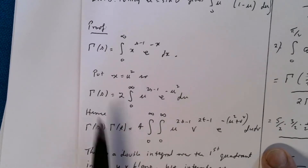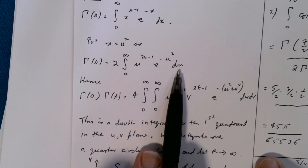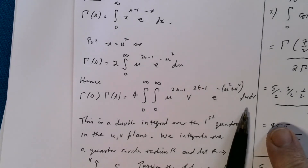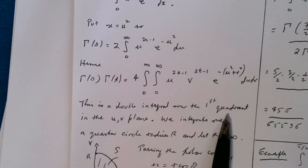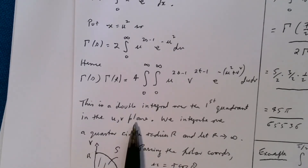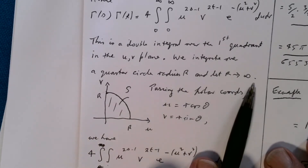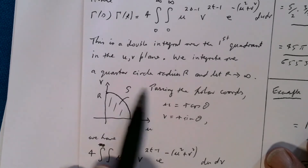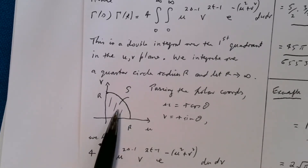When I want to multiply gamma of s times gamma of t, I take two copies of this, change the dummy variable from u to v in one of them, and multiply them together as an iterated double integral. We need to be careful here because these are improper integrals — this can be interpreted as a double integral over the first quadrant in the uv plane. We integrate over a quarter circle of radius R and then let R go to infinity, making sense of the integral over the first quadrant by integrating over a finite region and taking the limit.